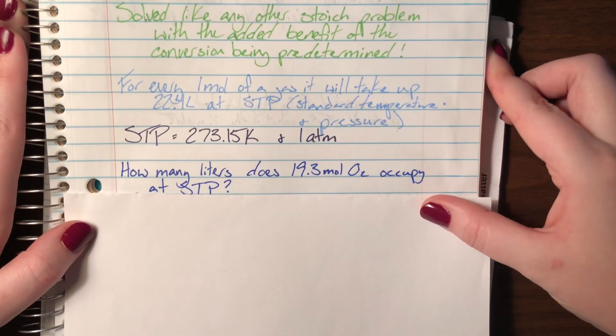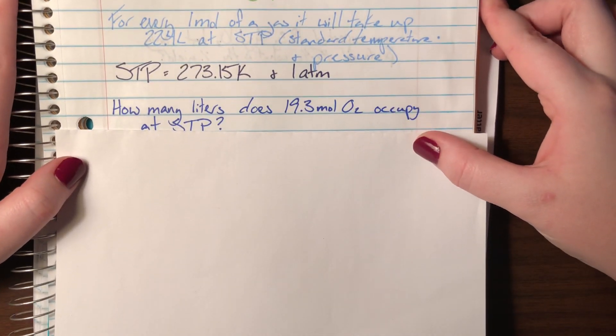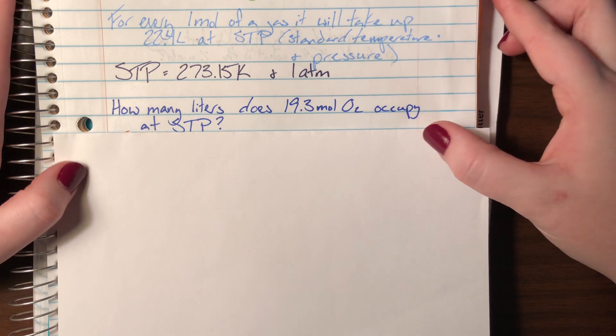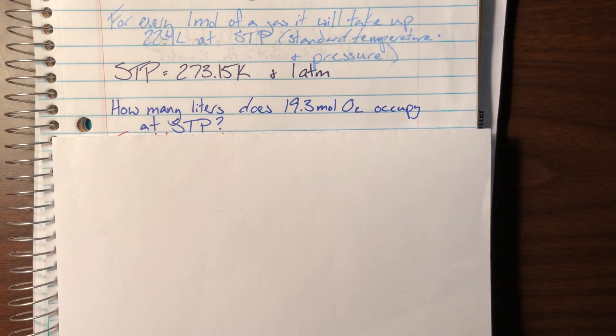So here is an example problem. How many liters does 19.3 moles of O2 occupy at STP? Since I see that it's at STP that means I do not have to use my ideal gas law equation and I can go ahead and treat it like any other stoic problem which means that I'm going to translate my problem from English to math.